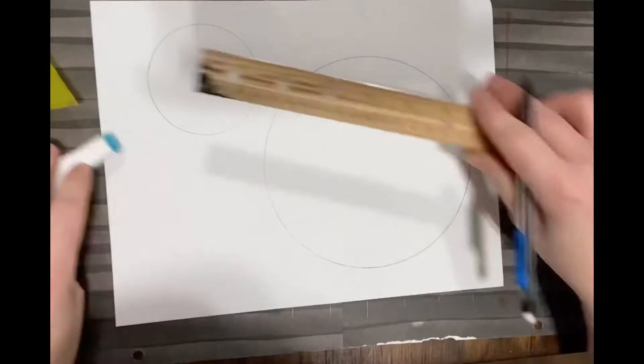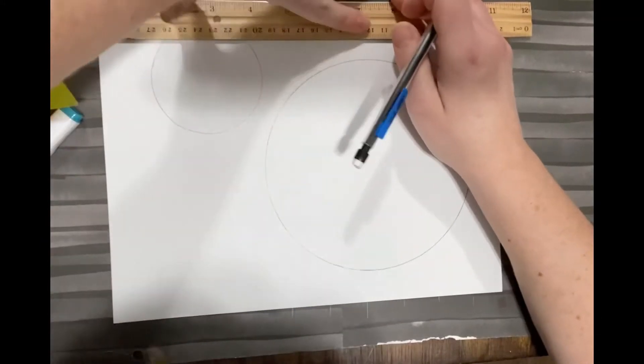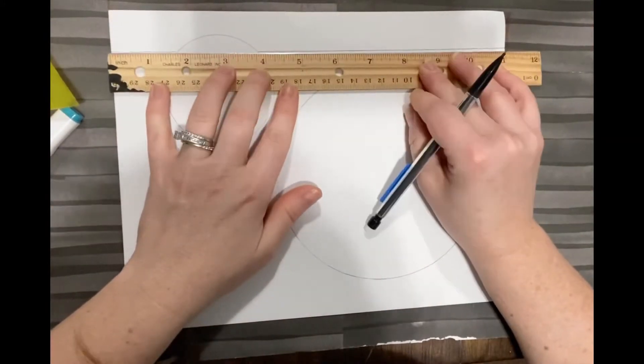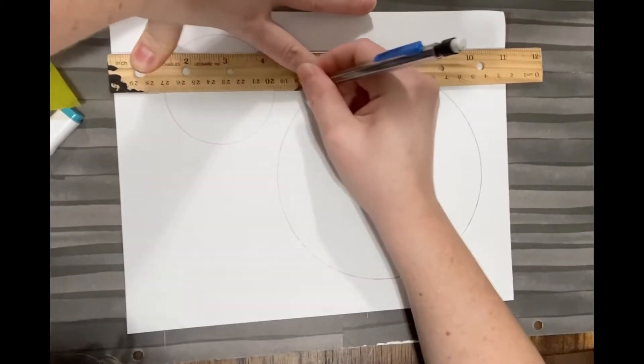Take your straight edge and line it up at the edge of the paper and draw a line underneath it, making sure to pick up your pencil every time you run into a circle line.